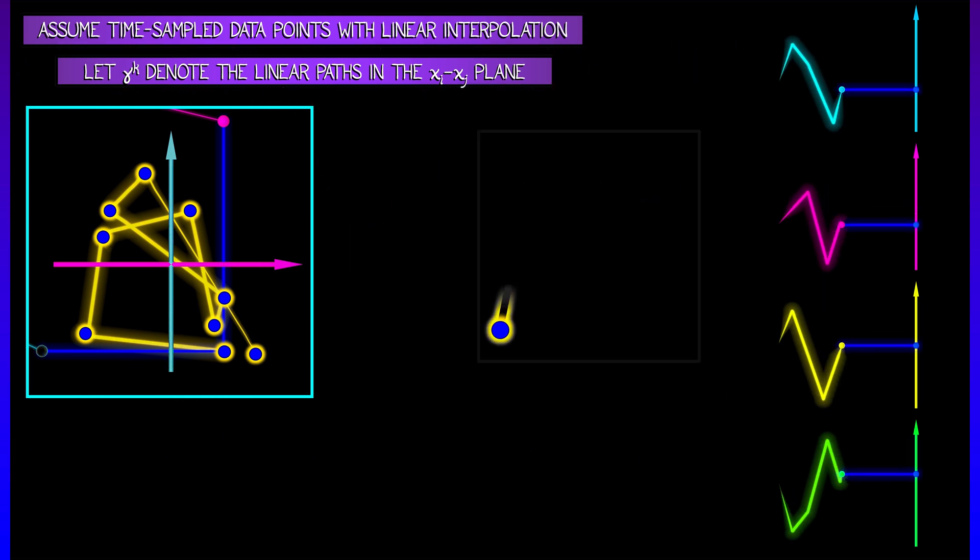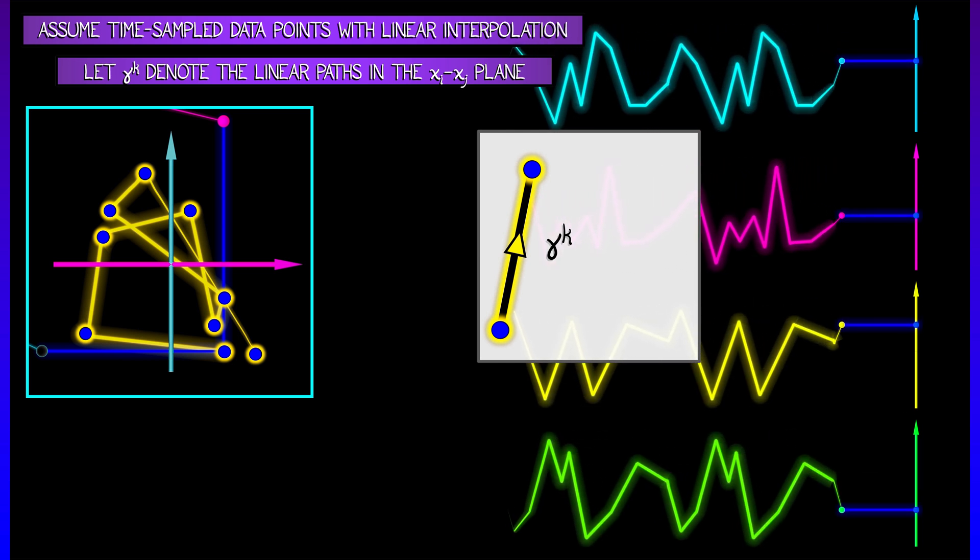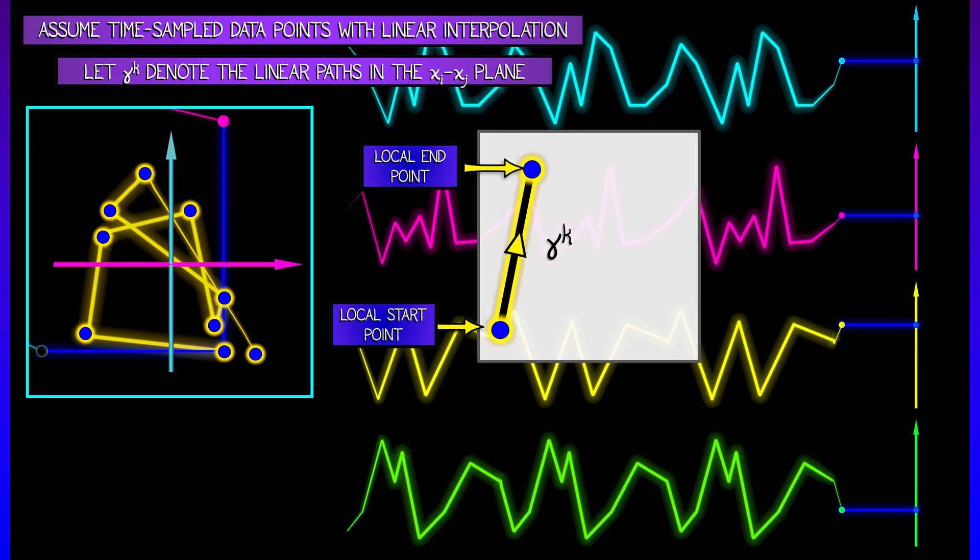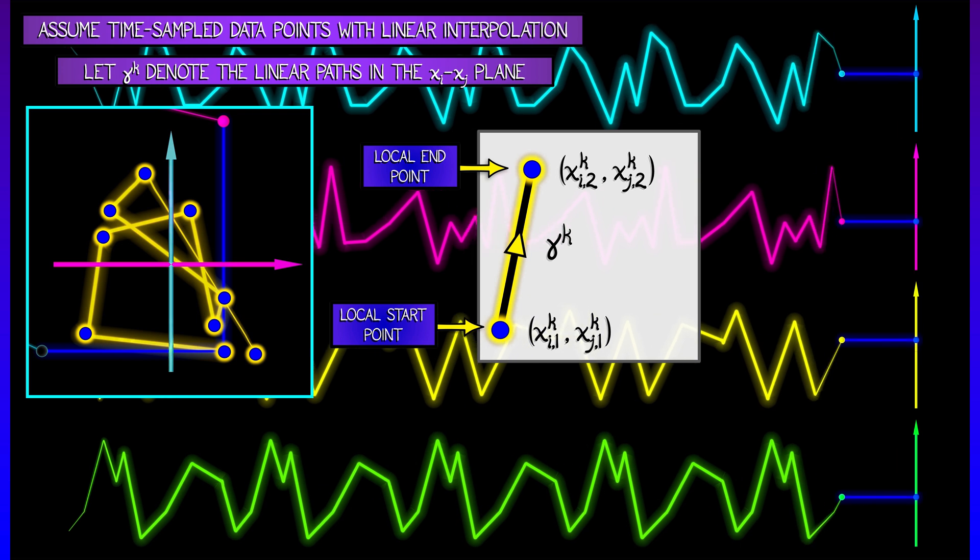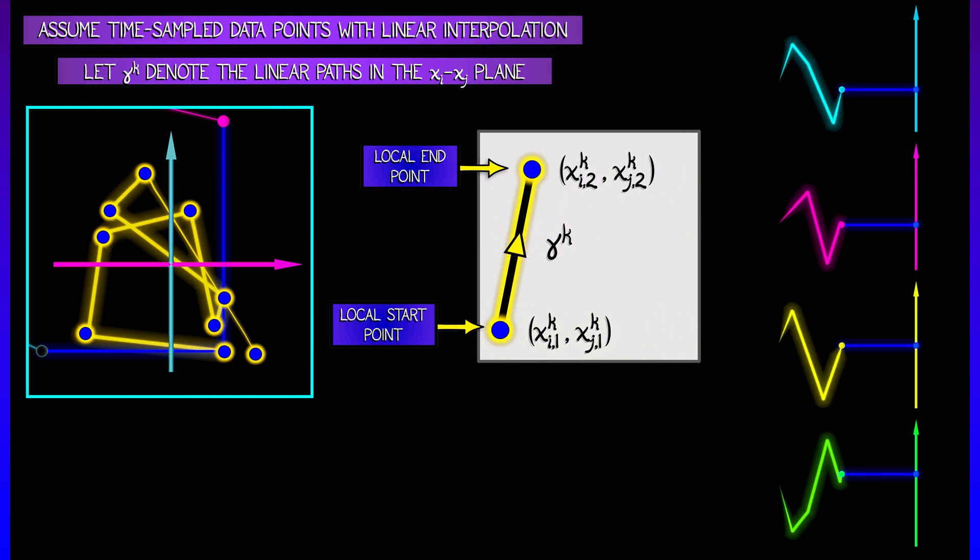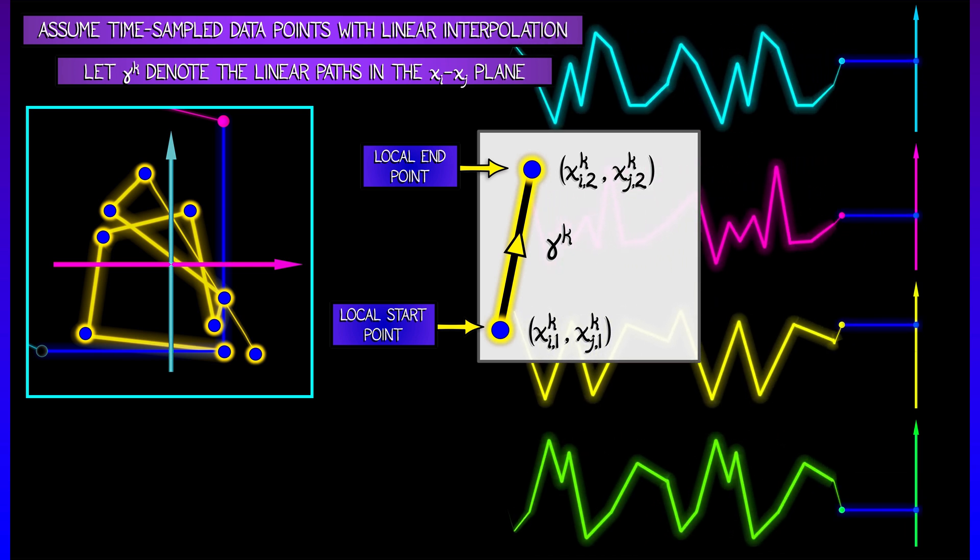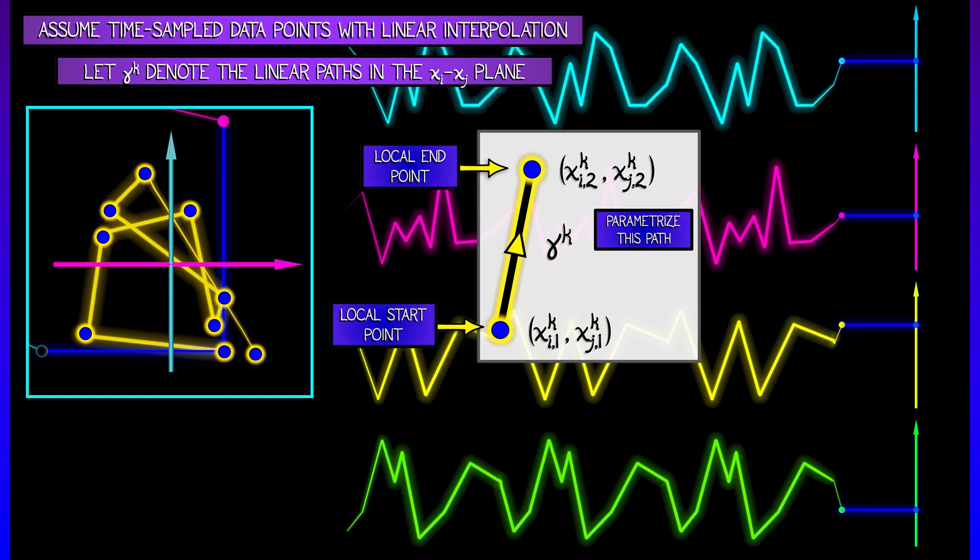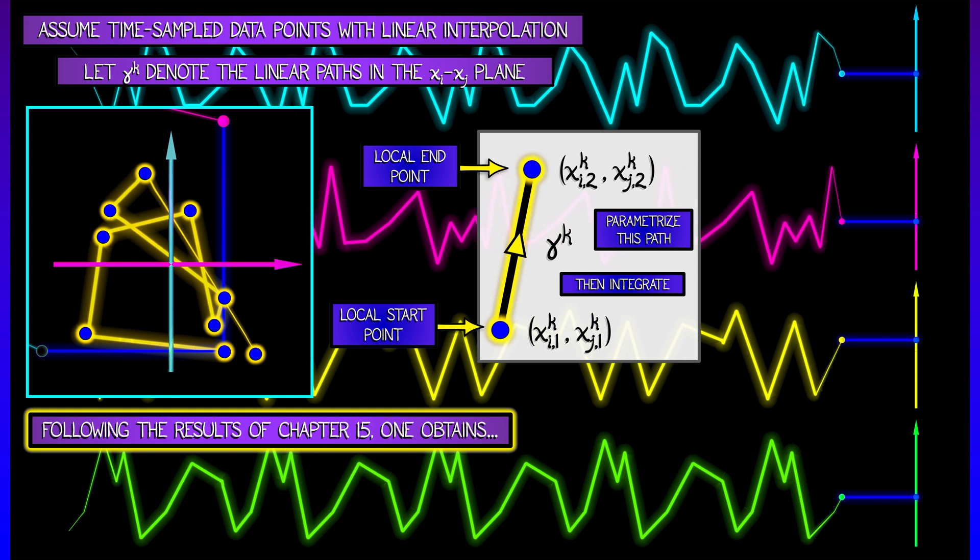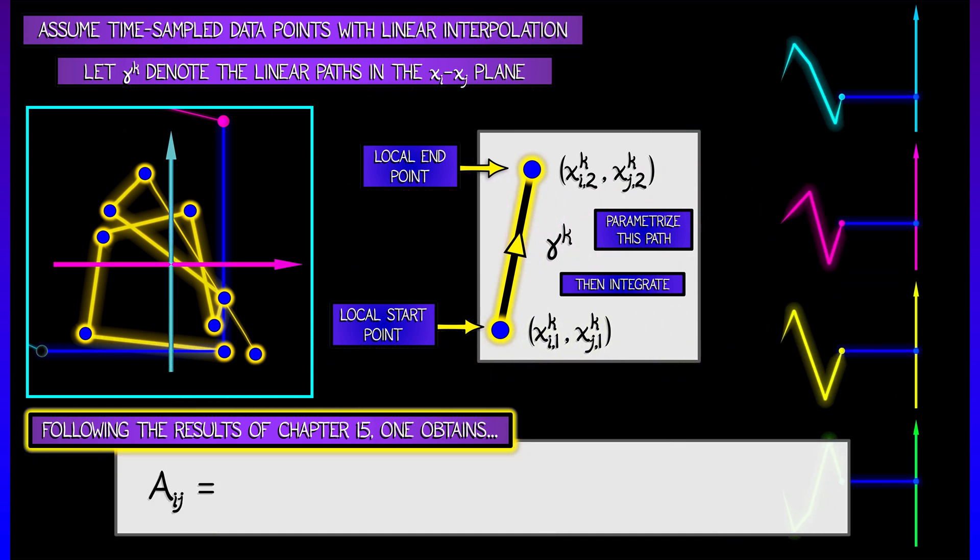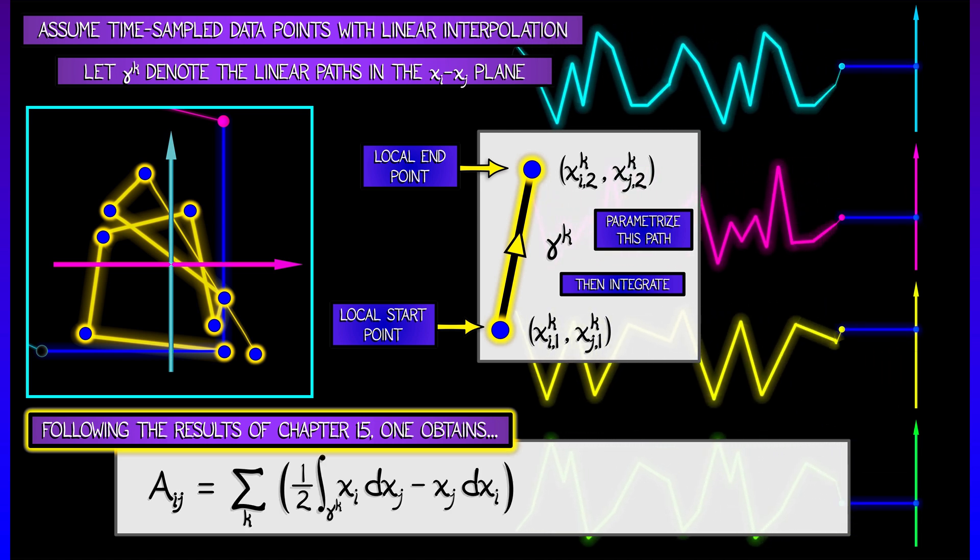Let's remember how that works. Let's say that you're trying to compute a sub ij, and so you're working with a projected path in the xi, xj plane. Each segment, let's call that gamma superscript k, has a start point and an end point. Now, there's no way to get around the fact that this notation is kind of awful. What? We got xi1k and xj1k and xi2k and xj2k. Whatever. Make up your own nicer notation. This is at least consistent with what we've done back in chapter 15.